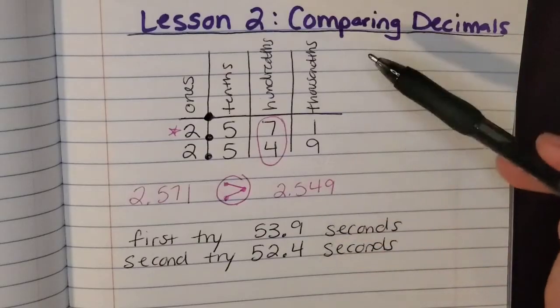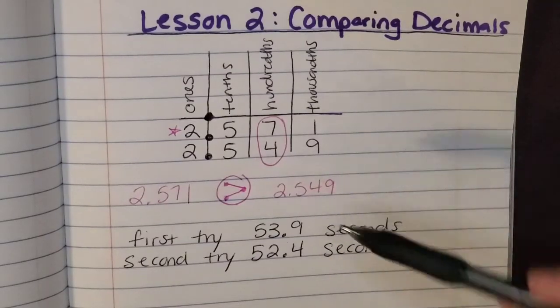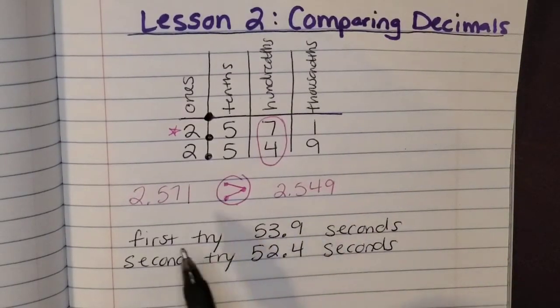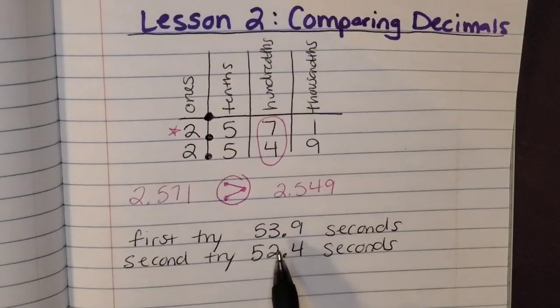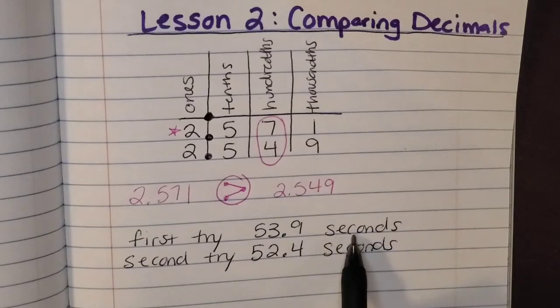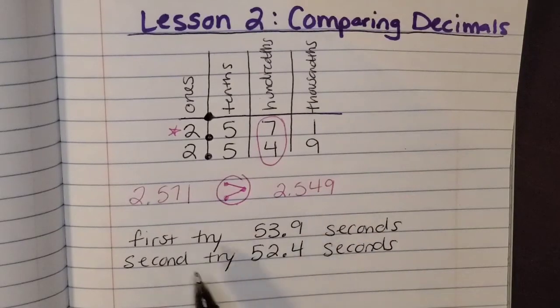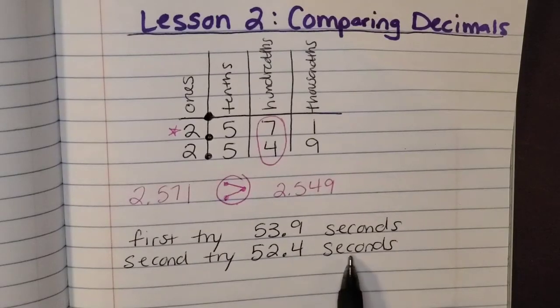So we want to be able to compare some decimal numbers. So in the video, you saw my first try, which ended up being 53 and 9 tenths seconds. Then later on, I did a second try that was 52 and 4 tenths seconds.